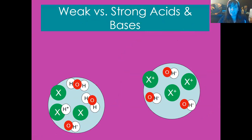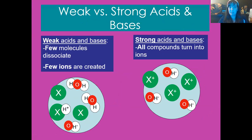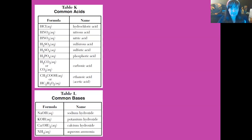When thinking about weak versus strong, this applies to both acids and bases. In weak acids and bases, very few molecules dissociate and few ions are created. In strong acids or bases, all compounds turn into ions.